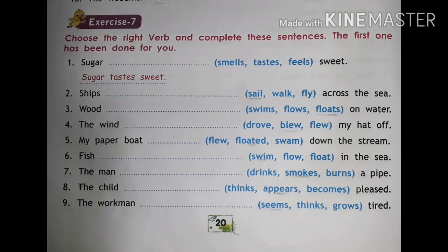Now the last exercise of this unit — Exercise 7. Choose the right verb and complete these sentences. The first one has been done for you. First sentence: sugar — dash — sweet. Options: smells, tastes, feels. The right answer is: sugar tastes sweet. Number two: ships — dash — across the sea. The right answer is: sail. Ships sail across the sea.